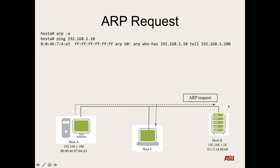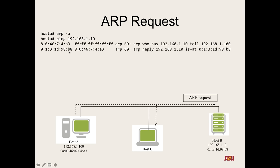So we send out this ARP request, and on our simple three-network diagram here, both host B and C get this request — because we're sending it everywhere, that's the whole nature. Now host B is going to reply and say I'm 01:3x:1D:98:B8. This is a message for 80:48:74:A3. How did it know who to reply to? Because we gave it in our Ethernet ARP request. This is an ARP reply — I'm saying that I am 192.168.1.10 and I'm at physical address 01:31:D9:8B:8. We get that reply and then we can start pinging.